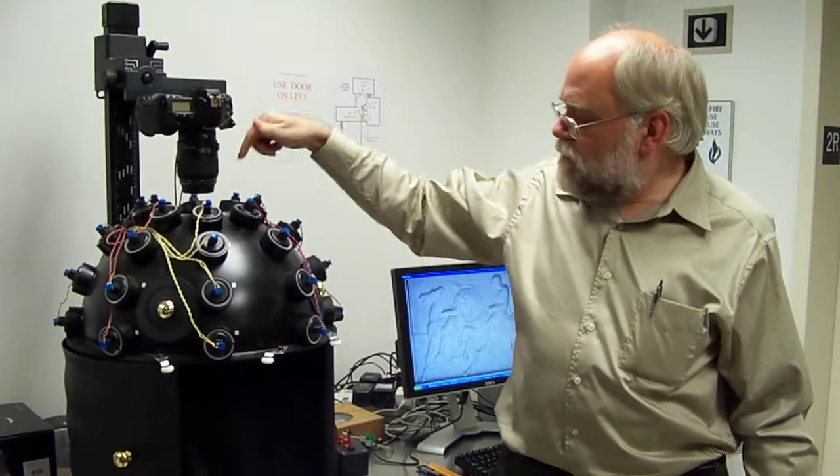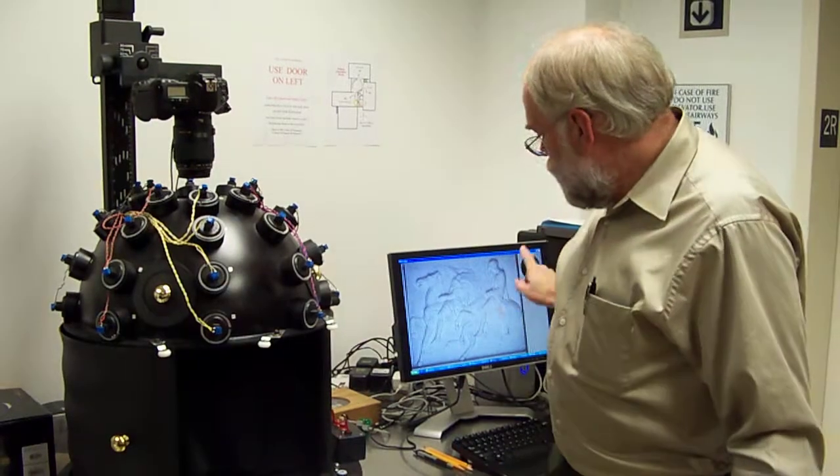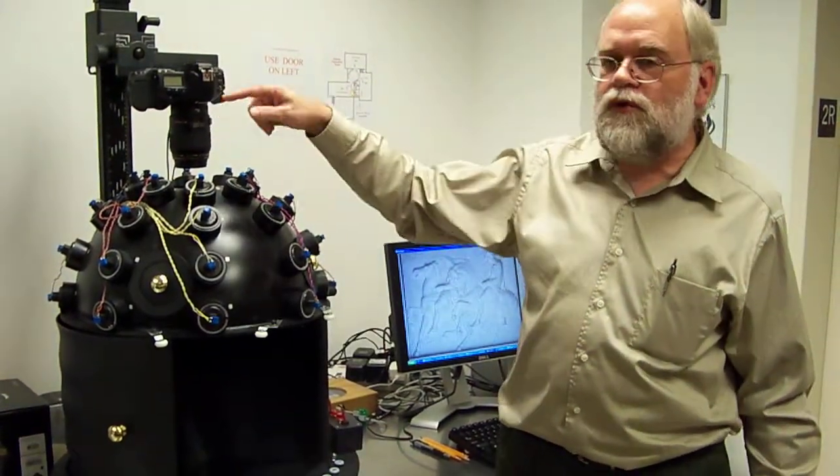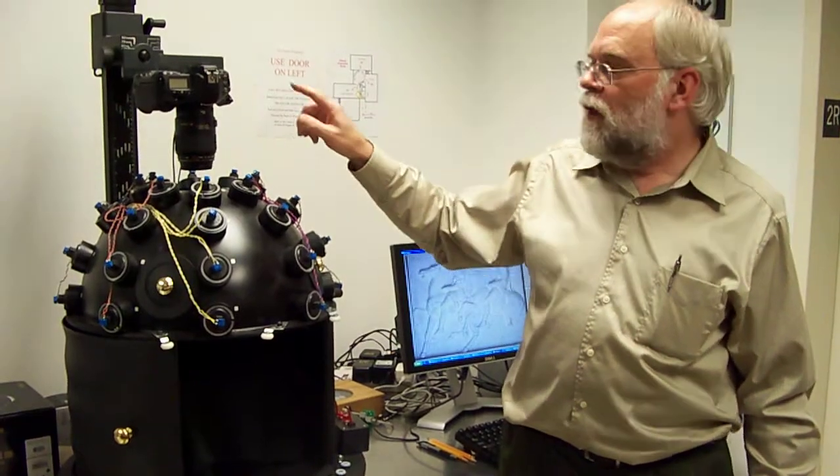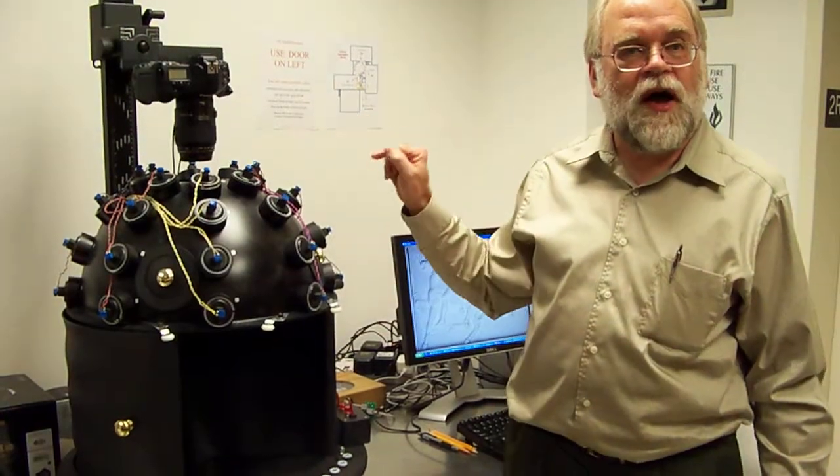You put your camera up here, facing straight down, focused on the object down here. You hit the button on the computer, and the computer takes 32 images of the object with one of these lights shining each time.